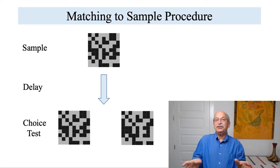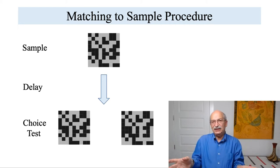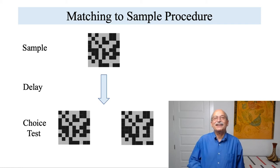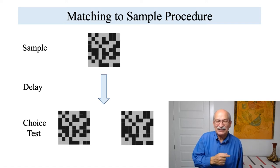And then the participants are given a choice test of two different stimuli, one of which matches the sample on that trial and the other of which does not. So it takes a little bit of figuring out which is the matching stimulus in this particular case. And that's the matching to sample test.